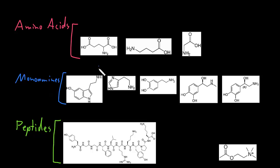The monoamines are organic molecules with an amino group connected to an aromatic group, and the amino group and the aromatic group are connected by a two-carbon chain.